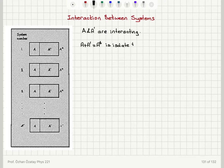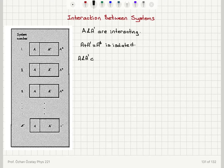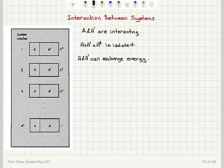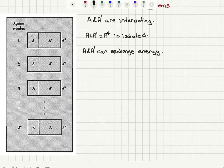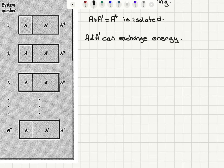Therefore we can have energy exchange between A and A', but not between A* and the environment. So A and A' can exchange energy because they're in interaction, but A* is isolated so A* cannot exchange energy with the environment. And we form an ensemble of N similar systems for A and A' in interaction.